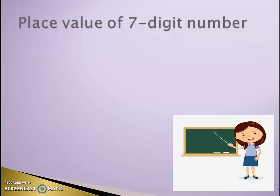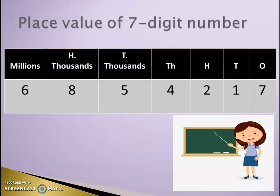Now, the place value of a 7-digit number. In this example, if you start from your right-hand side: 7 is ones, 1 is tens, 2 is hundreds, 4 is thousands, 5 is ten thousands, 8 is hundred thousands, and 6, that is the 7th digit.